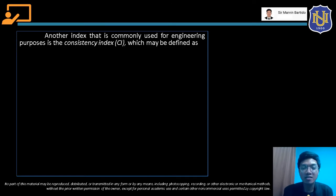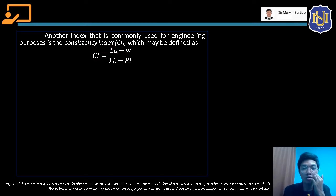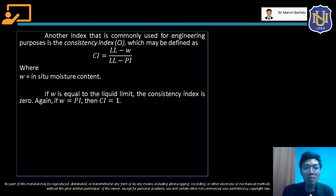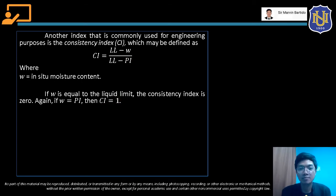Another index commonly used for engineering purposes is the consistency index. It may be defined as CI is equal to LL minus W over LL minus PI, where CI is the consistency index, LL is the liquid limit, W is the in situ moisture content, and PI is the plasticity index. When W equals the liquid limit, the consistency index becomes 0. When W equals PL, the consistency index becomes 1.